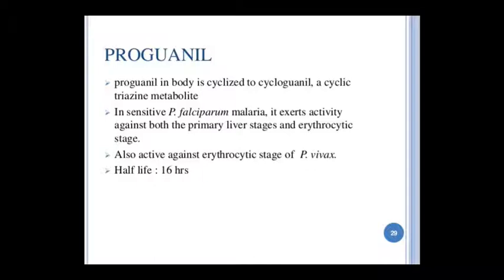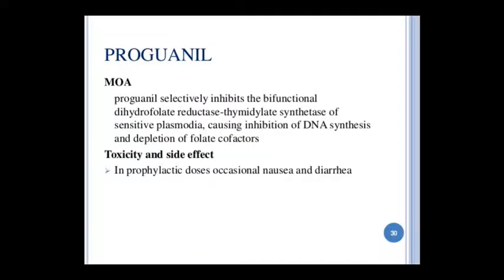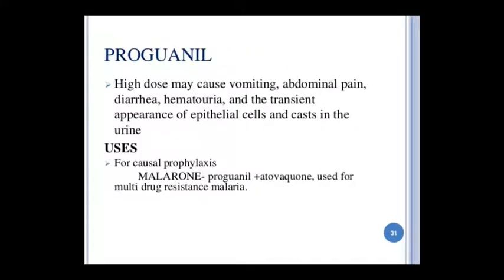Next: Proguanil — it is cyclized in the body to cycloguanil, which is a cyclic triazine metabolite. It is sensitive in falciparum malaria and shows activity in both primary liver stage and erythrocytic stage. It can also be given for vivax erythrocytic stage. Half-life is 16 hours. Mechanism of action: Proguanil inhibits bifunctional dihydrofolate reductase-thymidylate synthase in sensitive plasmodia, blocking DNA synthesis and reducing folate co-factors. Side effects at prophylactic doses include nausea and diarrhea; at high doses: vomiting, abdominal pain, diarrhea, and hematuria with epithelial cells and casts in urine.